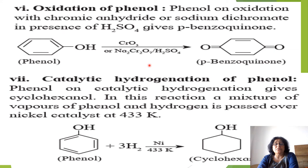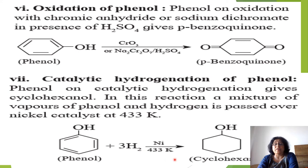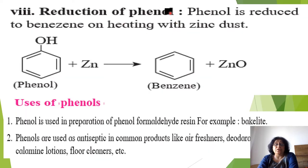Oxidation: phenol on oxidation in presence of chromic anhydride (CrO₃), or sodium dichromate, forms para-benzoquinone — a structure with C=O at positions 1 and 4 and alternate double bonds. Catalytic hydrogenation: phenol vapors and hydrogen vapors passed over nickel catalyst at 433 Kelvin give cyclohexanol (unsaturated phenol converted to saturated cyclohexanol). Reduction: phenol heated with zinc dust gives benzene and zinc oxide.